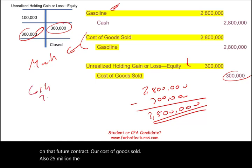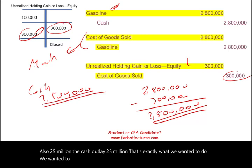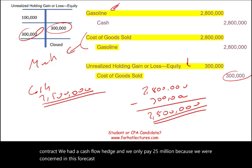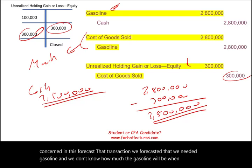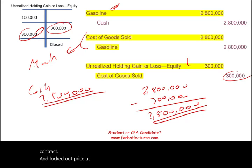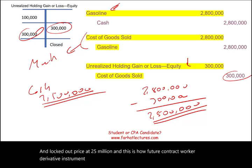The result: cost of goods sold is $2.8 million minus the $300,000 gain from the futures contract, giving a net cost of goods sold of $2.5 million. The cash outlay is also $2.5 million — exactly what we wanted. We used a cash flow hedge with a futures contract derivative and locked our price at $2.5 million, because we had forecasted the need for gasoline and wanted to protect that uncertain cash flow.